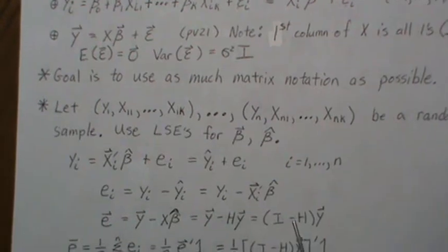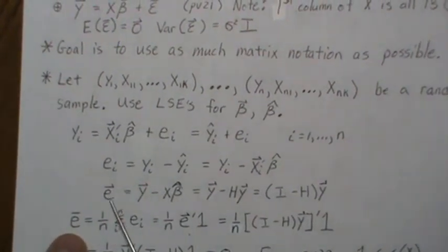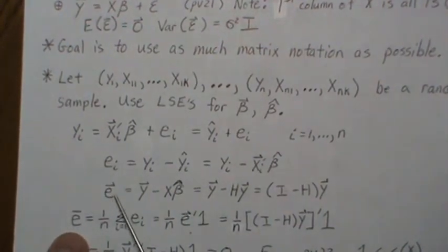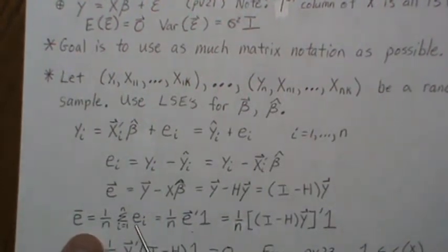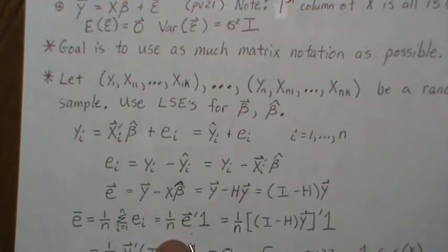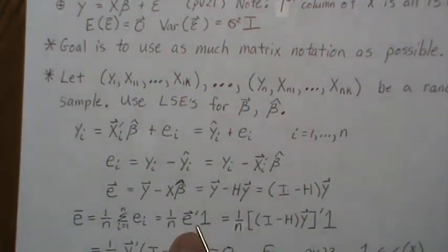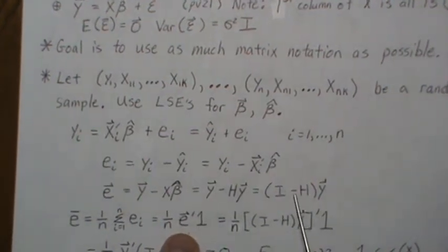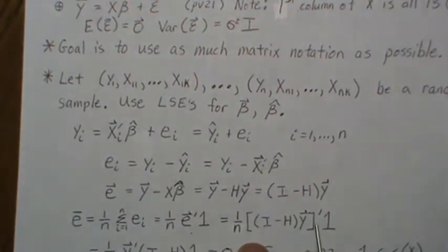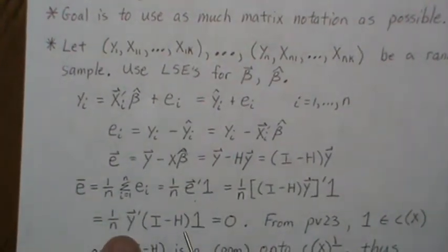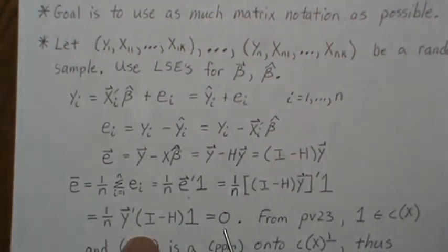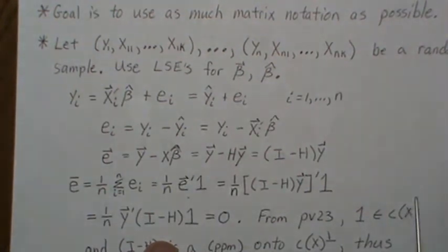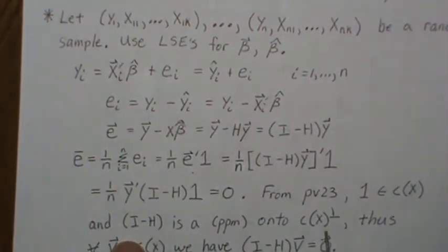Note that the average error — adding up errors and dividing by n — gives the mean. The sum of the E's can be thought of as the vector of E's dotted with the ones vector, and E is (I − H)Y. Taking the transpose, this is zero, because from the previous video (PV 23), since the ones vector is in the column space of X.